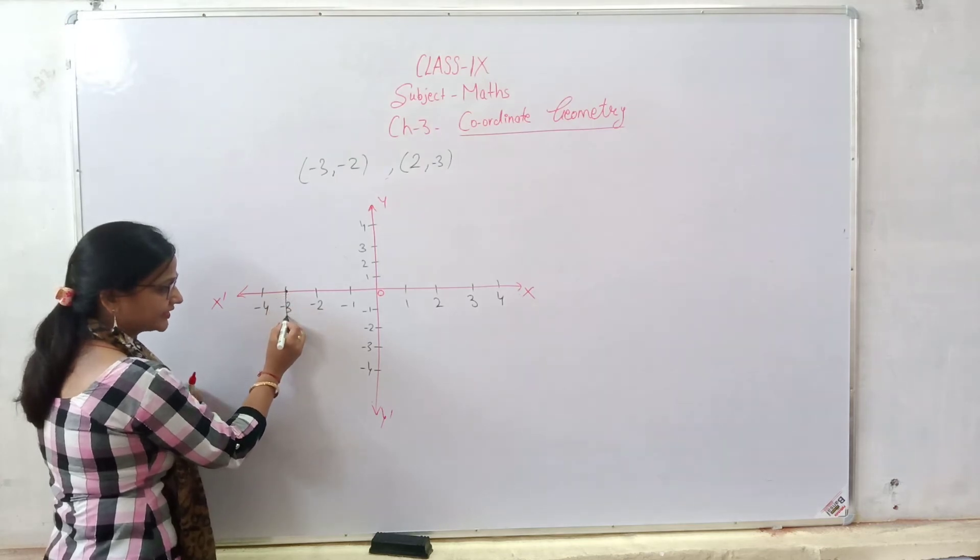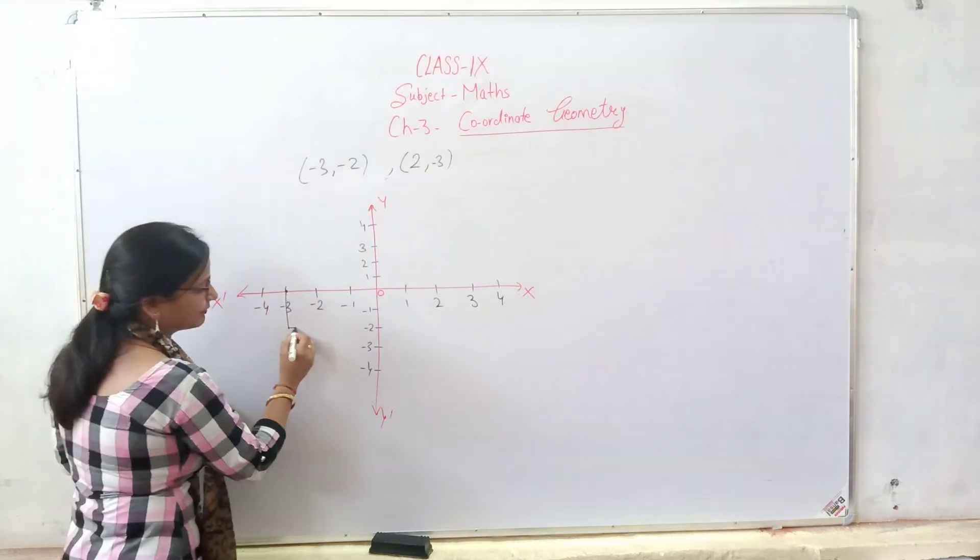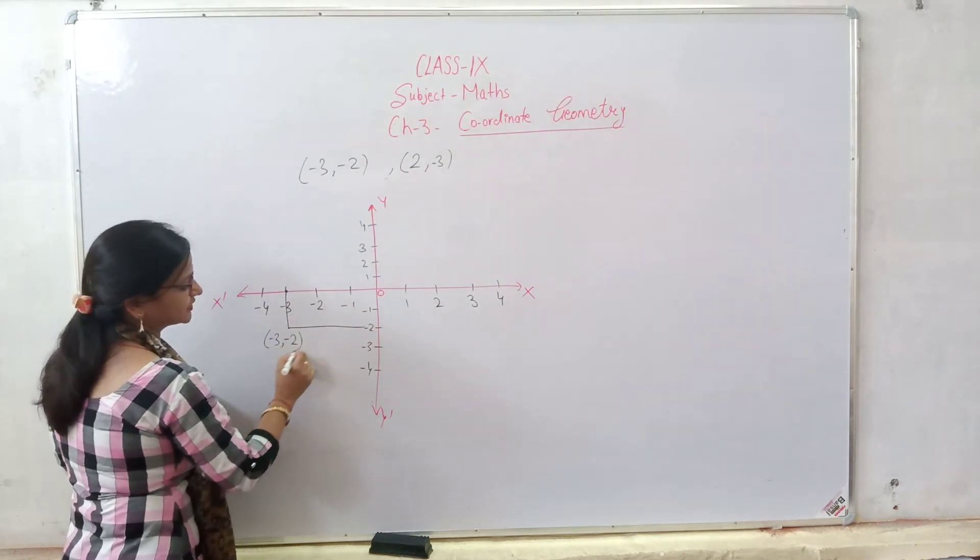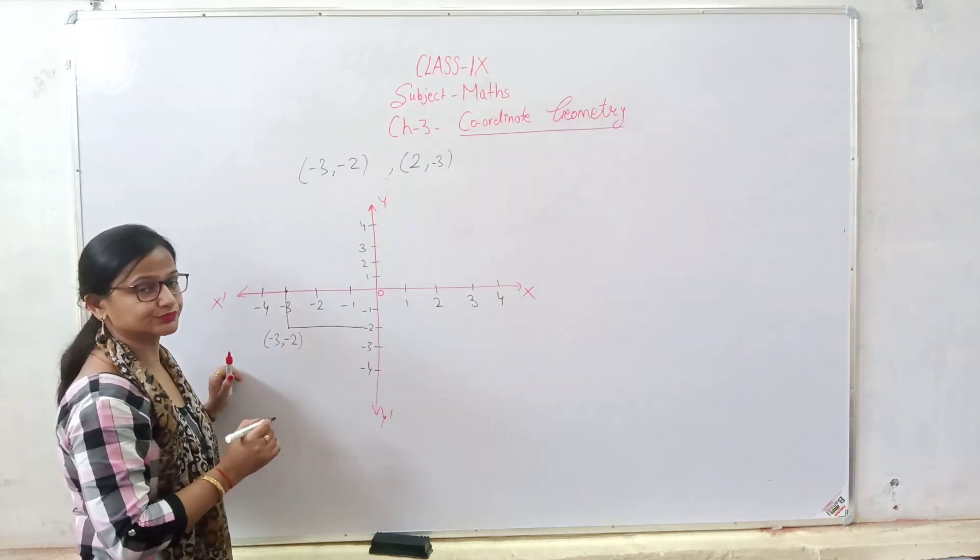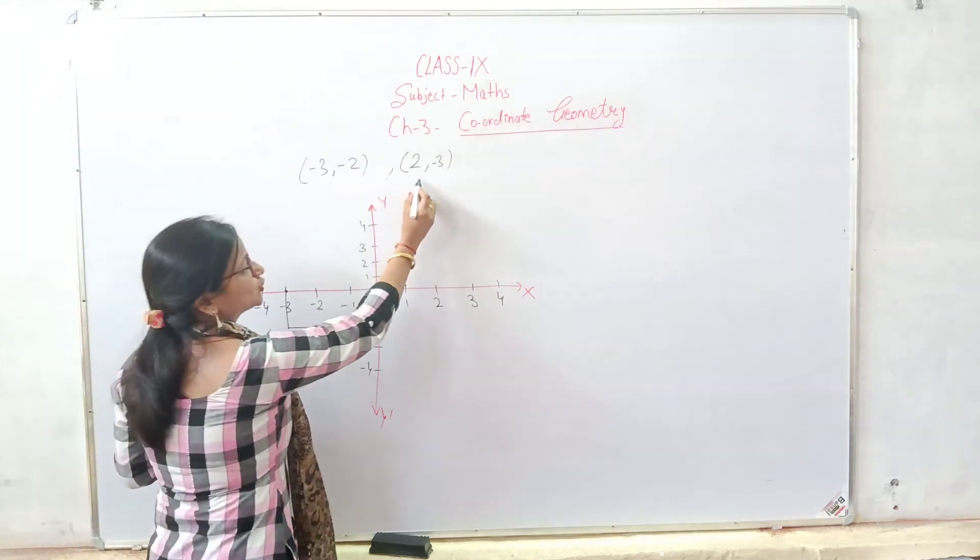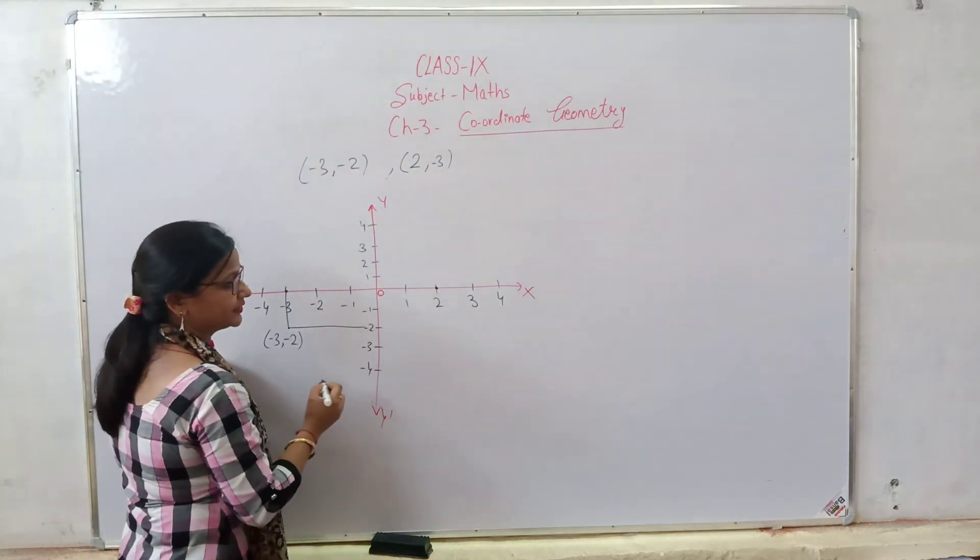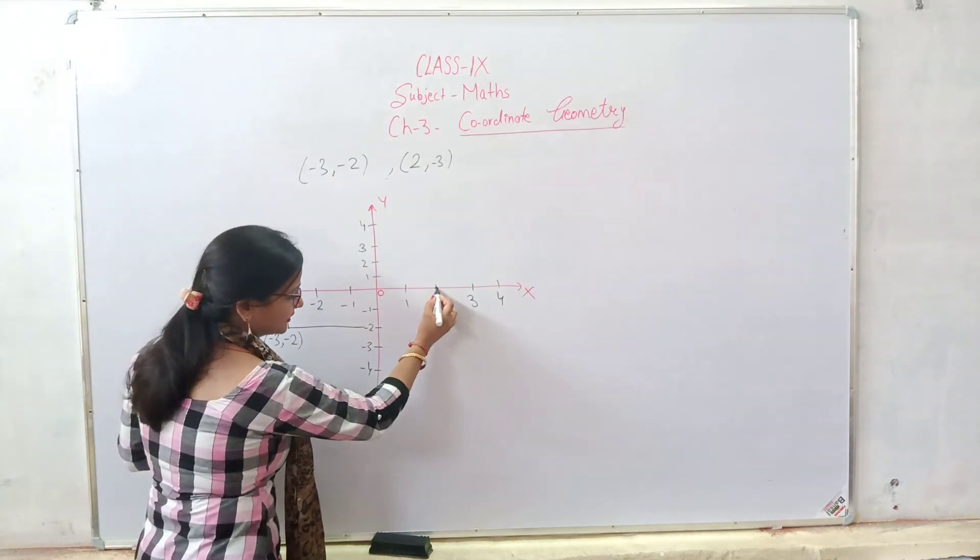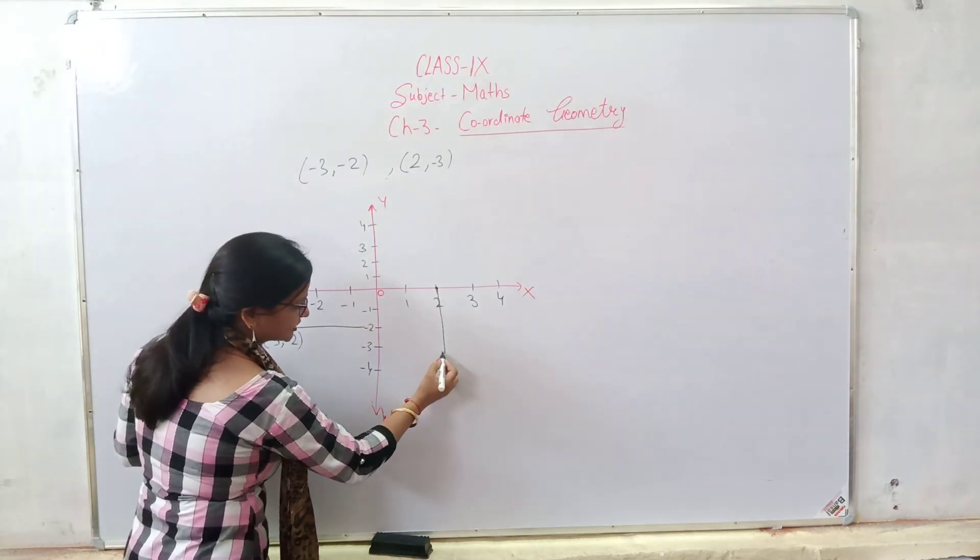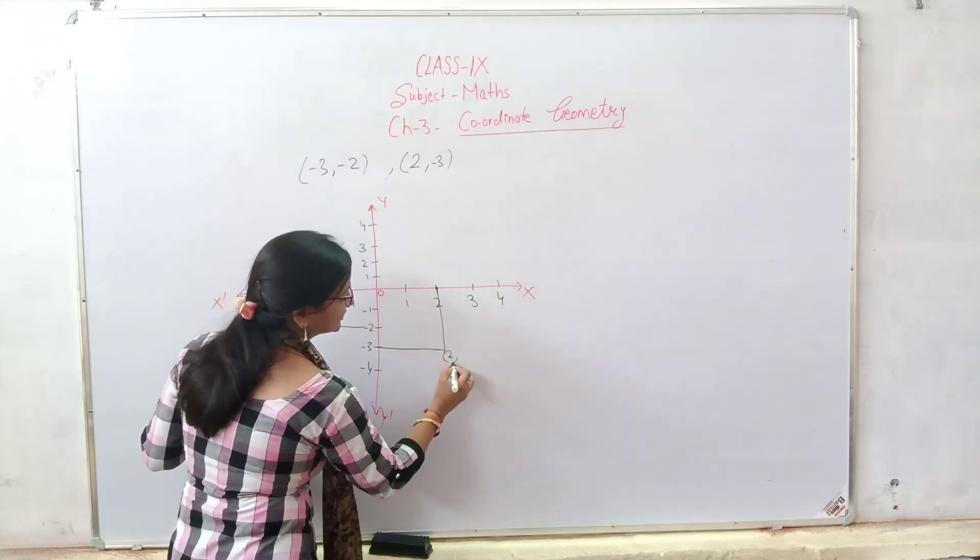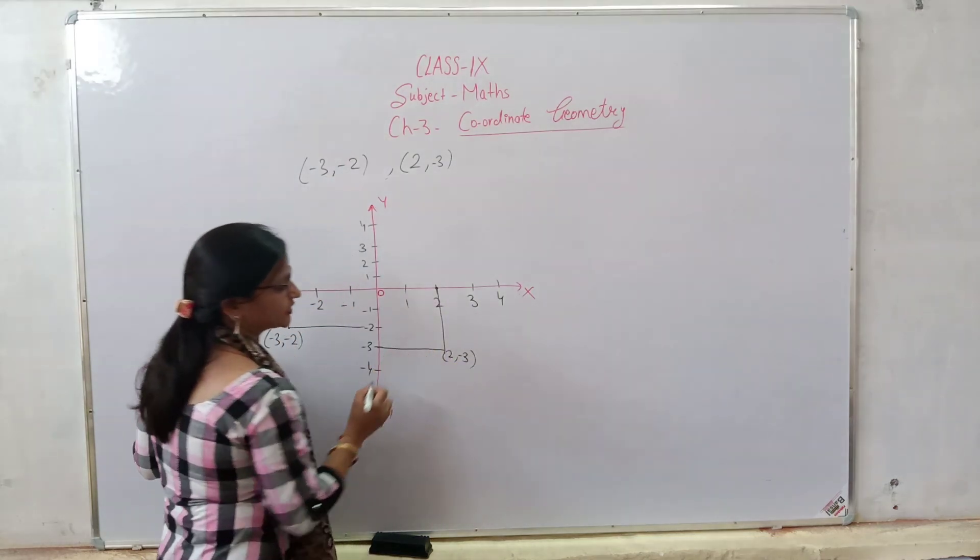So you will bring it down until your point minus 3 comes. Then this point becomes (-2,-3). Next step, (2,-3). 2 means x you have to take upward and minus 3 means you will bring it down until minus 3 comes on y. And this point becomes (2,-3).